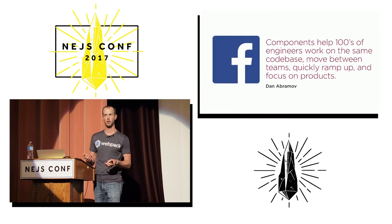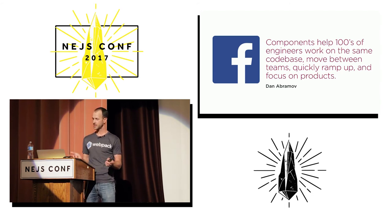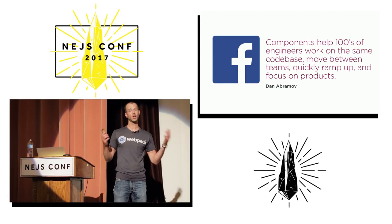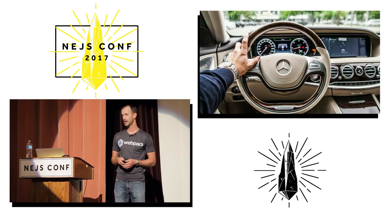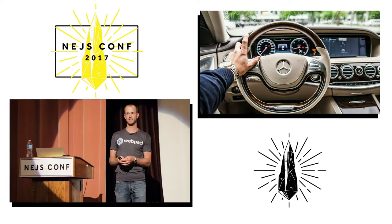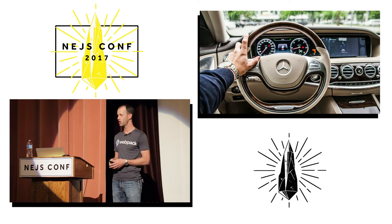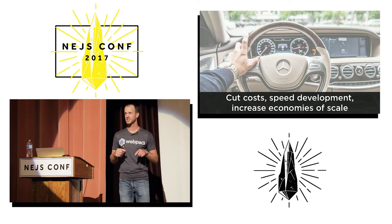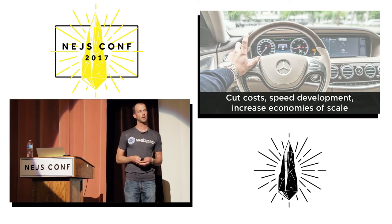At Facebook, they are heavily invested in the component model using React, finding that components help hundreds of engineers work on the same codebase, move between teams, quickly ramp up, and focus on products. I'm a car guy — I work for an automotive software company in Kansas City. You look at a Mercedes and think these are special parts, but actually there are all sorts of reusable components: seat belts, airbag systems, transmissions, engines — used across vehicles. This cuts costs, speeds development, and increases economies of scale. As developers, we have all this same power now.